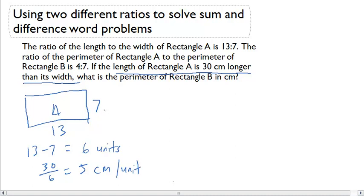This will now allow me to get my dimensions for this rectangle. So I have 7 times 5 is 35, and I have 13 times 5, which is going to be 65. So the dimensions of my rectangle are 65 and 35.